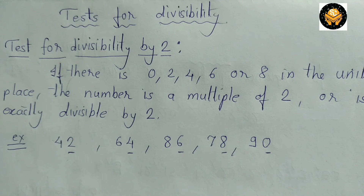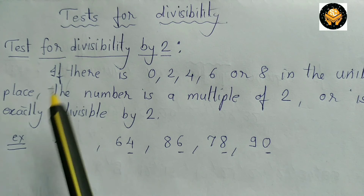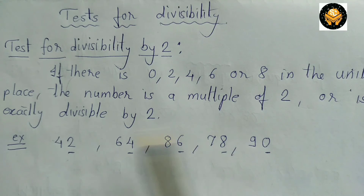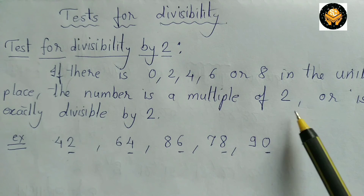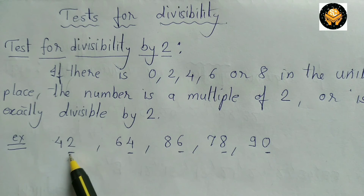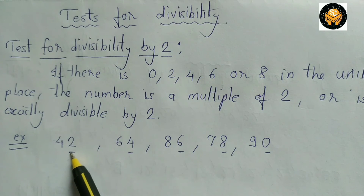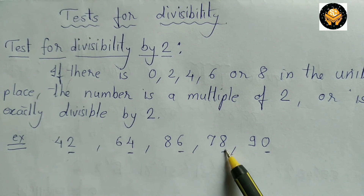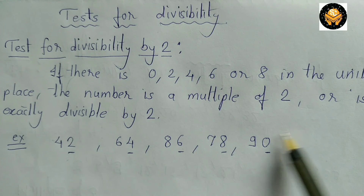Let's see how to find whether a given number is a multiple of 2 or is exactly divisible by 2. If there is 0, 2, 4, 6, or 8 in the unit place, the number is a multiple of 2 or is exactly divisible by 2. For example, numbers with 2, 4, 6, 8, or 0 in the unit place are all divisible by 2.